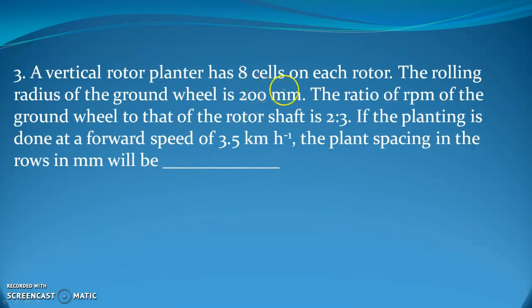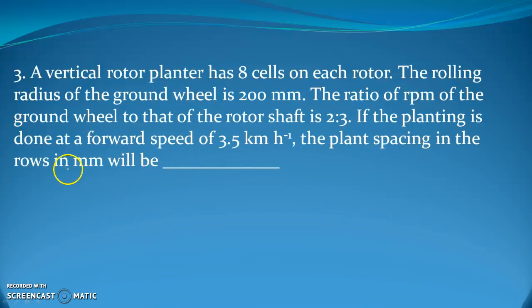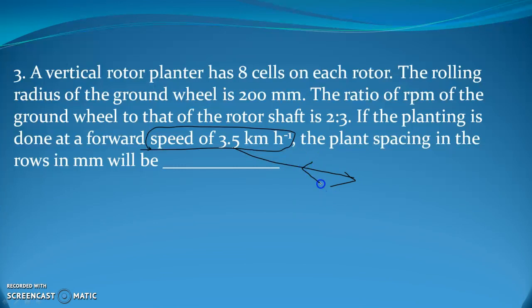Next question: a vertical rotor planter has 8 cells on each rotor. The rolling radius of the ground wheel is 200 mm. The ratio of RPM of the ground wheel to the rotor shaft is 2:3. Planting is done at a forward speed of 3.5 km/h. Find the plant spacing in the row in millimeters. Note that the forward speed is irrelevant here because there is a ground wheel, so only the ground wheel matters.